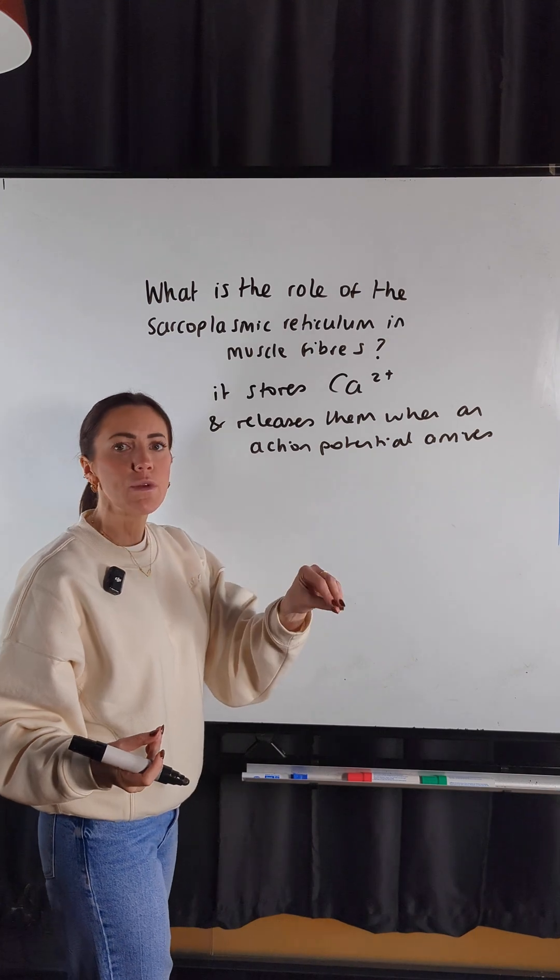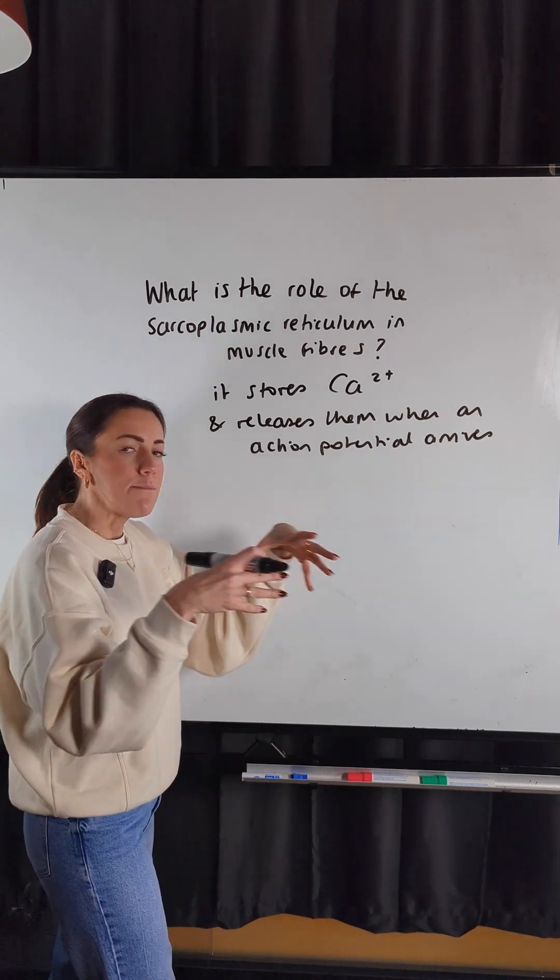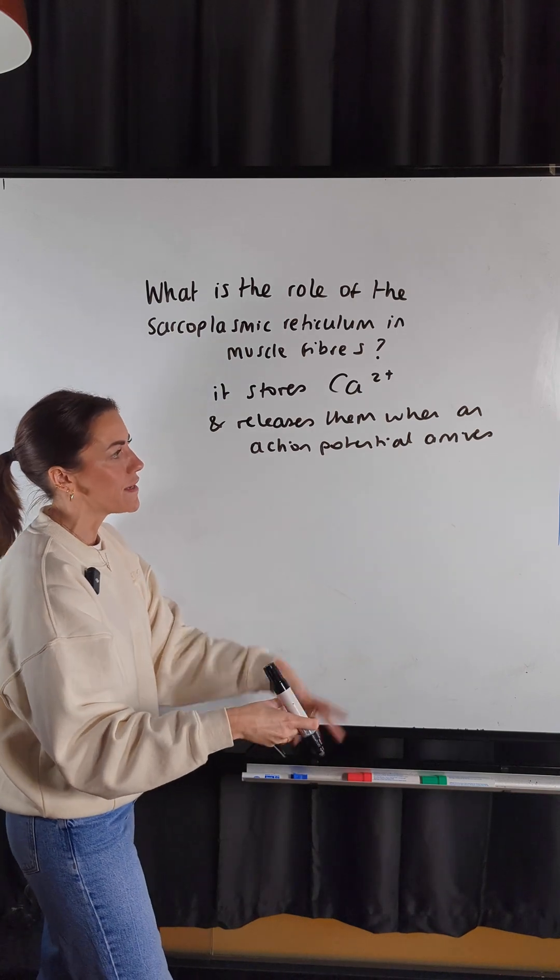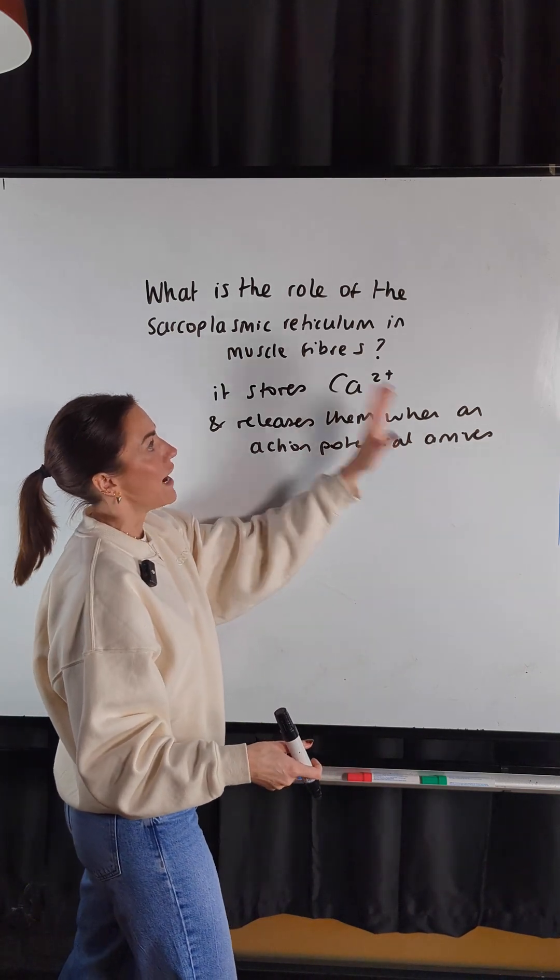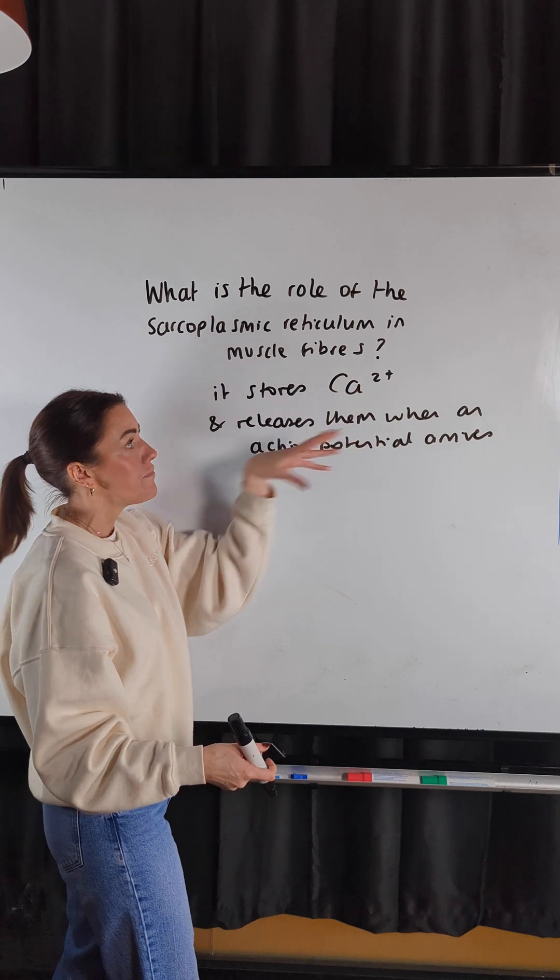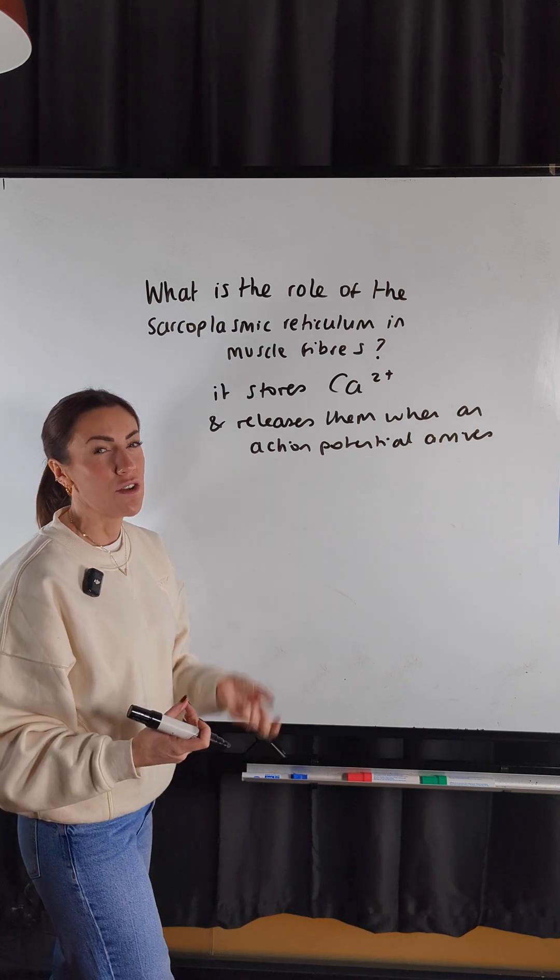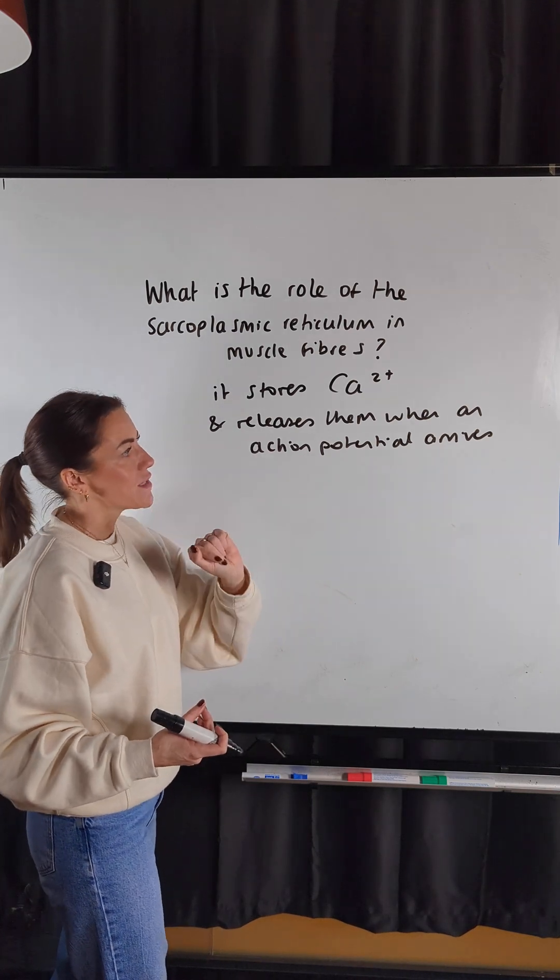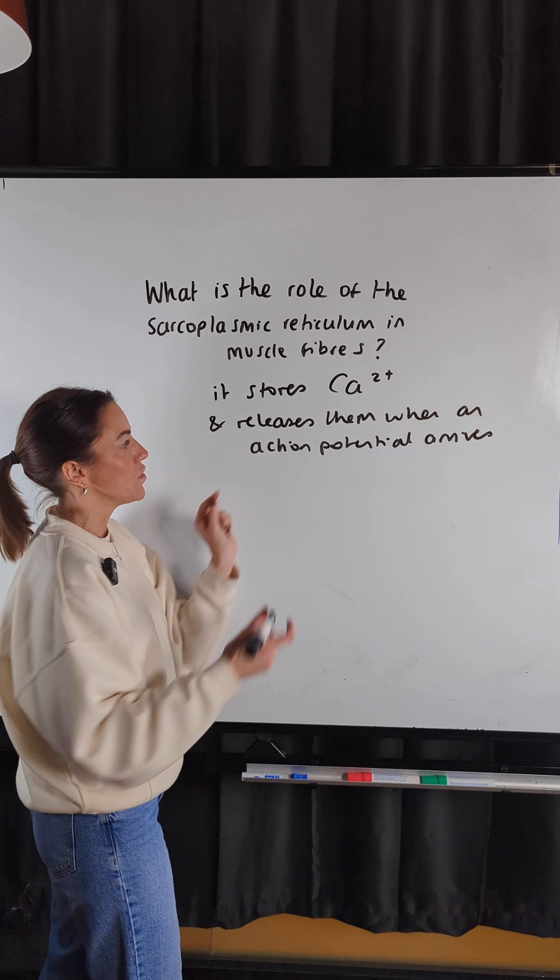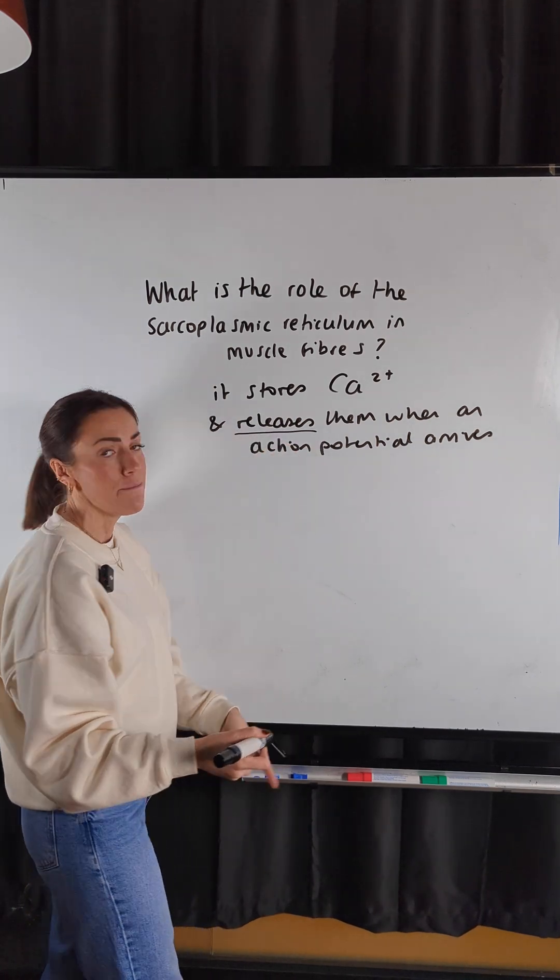It will be carried down the transverse tubules or the T-tubules deep into the center of the muscle fibers. And when the action potential arrives at the sarcoplasmic reticulum, it will cause voltage-gated calcium ion channels to open. And that's why the stored calcium ions will then be released into the sarcoplasm.